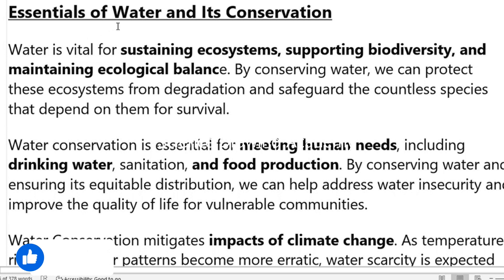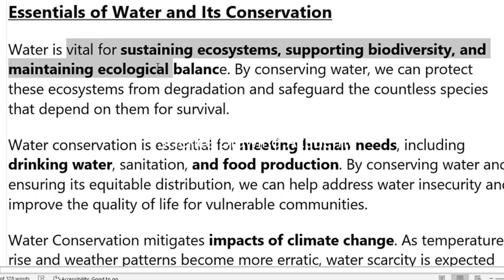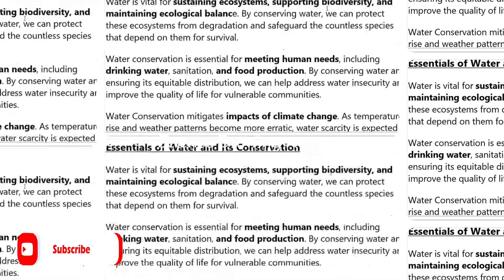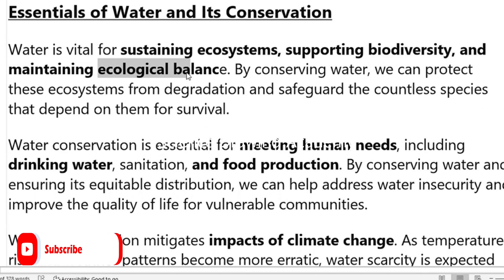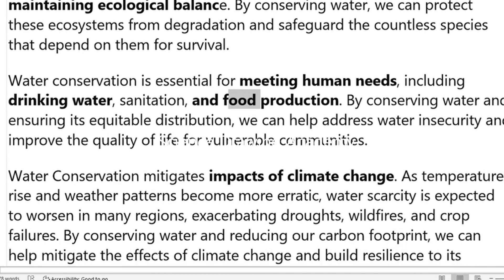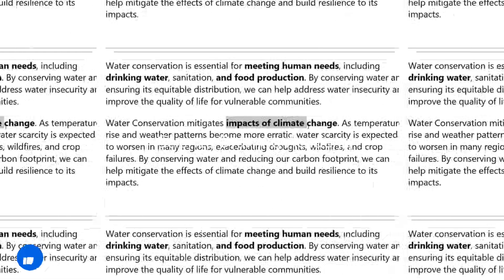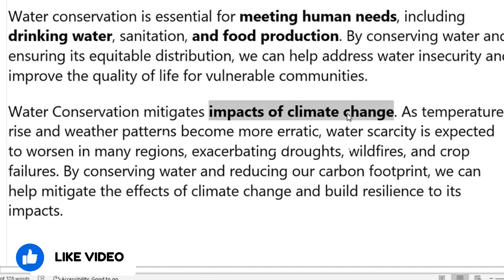In the next paragraph, we should talk about the essentials of water and how we are going to conserve it. These are the vital essentials — in order to sustain the ecosystem, biodiversity, and ecological balance, we require water. We also need water for meeting human needs like drinking water and food production.